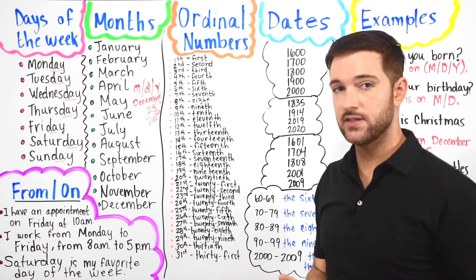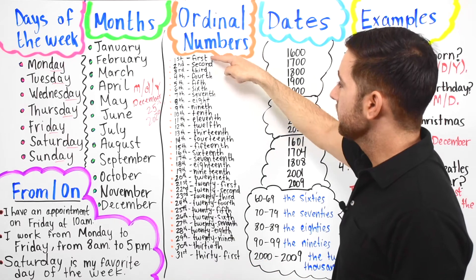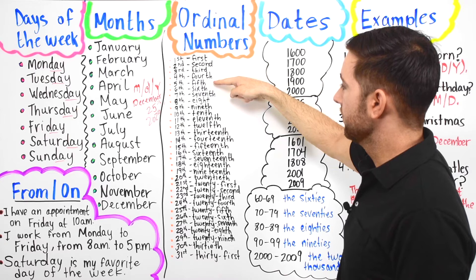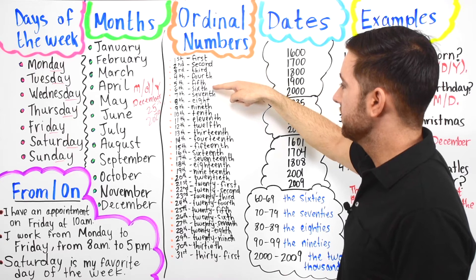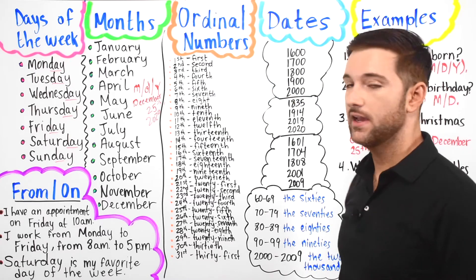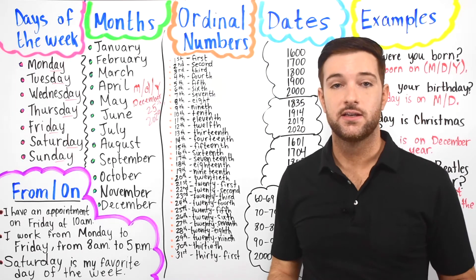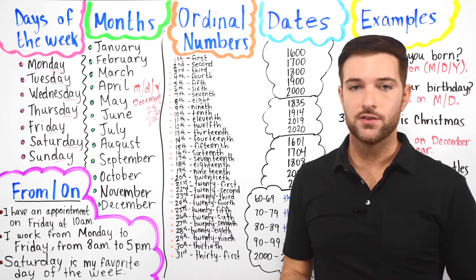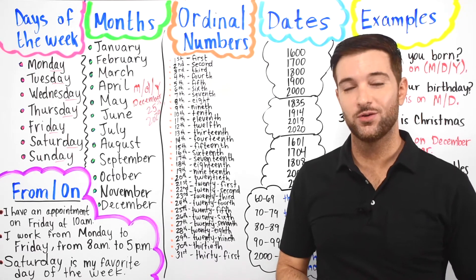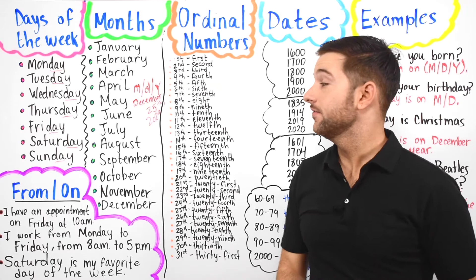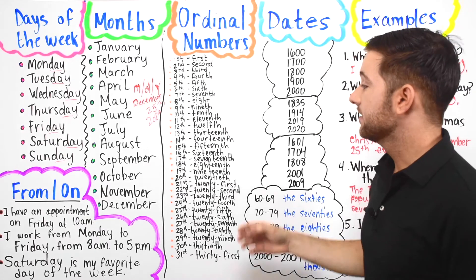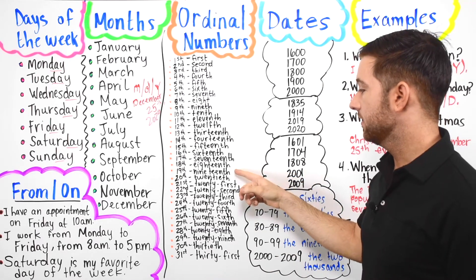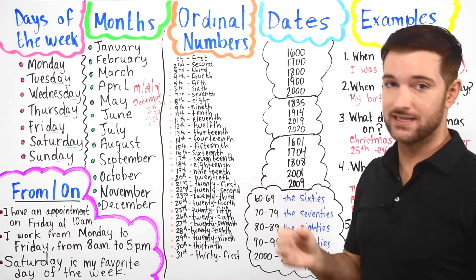I'll say the ordinal numbers now: first, second, third, fourth, fifth, sixth, seventh, eighth, ninth, tenth, eleventh, twelfth, thirteenth, fourteenth, fifteenth, sixteenth, seventeenth, eighteenth, nineteenth, twentieth.